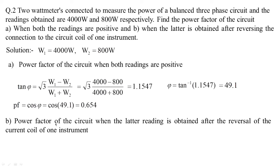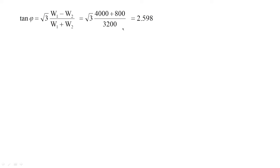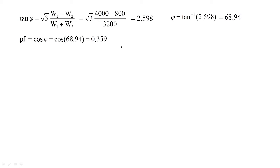Now, what if the latter reading is obtained after reversing the connection to the current coil of one instrument? This means W1 = 4000 W and W2 = -800 watts. Substituting into the tan φ formula gives tan φ = 2.598, so the power angle is 68.94 degrees and the power factor is 0.359.